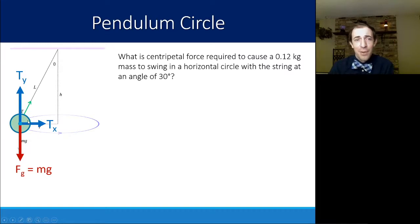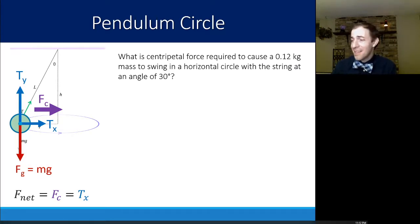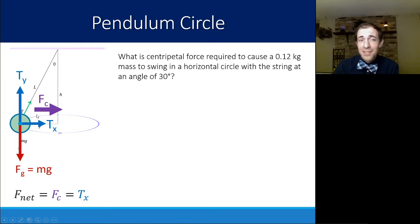Tx into the center of the circle, Ty going straight up, and the centripetal force pointing towards the center there, which means I know that the net force is the same as the centripetal force, which in this case is going to be all because of Tx, it's the only one in that direction. So if I'm trying to find the centripetal force, it means I'm really looking for Tx here. That's my goal, because once I have Tx, I have Fc.